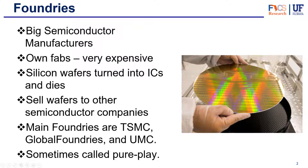These companies just make silicon wafers, do the circuits, and manufacture them, but then they sell them to other companies that do the designing and the marketing. They just take care of the manufacturing part of the process. Some of the main foundries are TSMC, Global Foundries, or UMC. Another name for these companies that do just the manufacturing is Pure Play, or Pure Play Foundries.